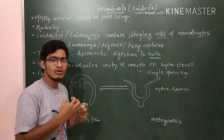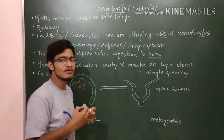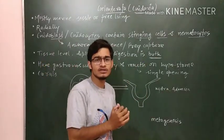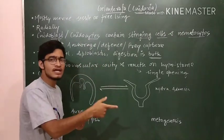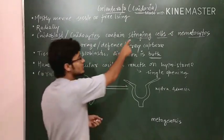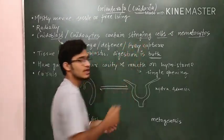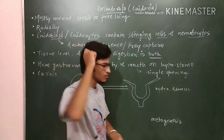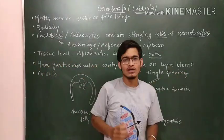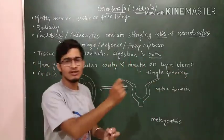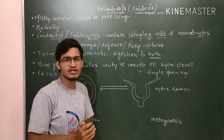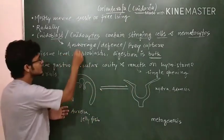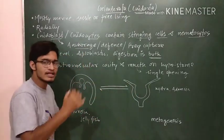If the Coelenterata wants to attach its body to some surface, it will sting that surface. That is why it is known as the stinging cell. So nematocysts help in anchorage or attachment.